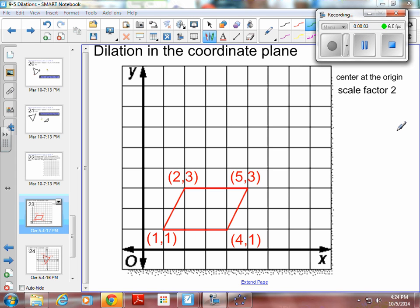Okay, geometry. This is Chapter 9, Section 5, Example 3. We are dilating in the coordinate plane. Notice that we are doing a center at the origin and a scale factor of 2. If my center is at the origin, my scale factor is 2. This one is really easy. I'm just going to multiply everything by 2.